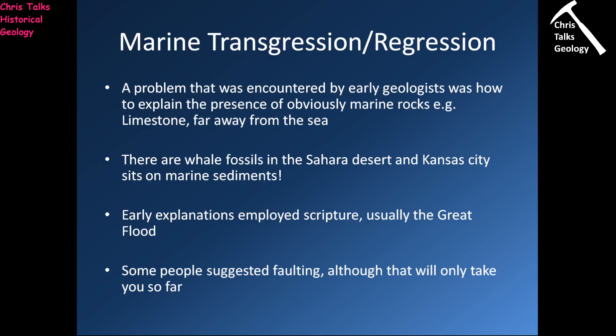We've touched on the fact that sea level will change, and this was quite a major problem for early geologists. They came to a relatively rapid conclusion that rocks like limestone were being deposited in marine environments. However, in some instances you could get limestone miles away from the coast — huge distances. There are whale fossils in the Sahara, which is definitely not the type of environment you'd expect to find a whale. Kansas City, one of the most central cities of the United States and nowhere near a coastline, is underlain by a sequence of carbonates, muds, and sandstones, suggesting it was once part of a coastal setting.